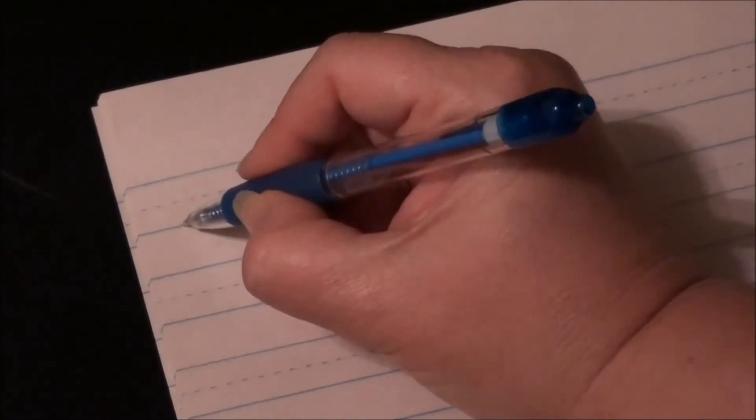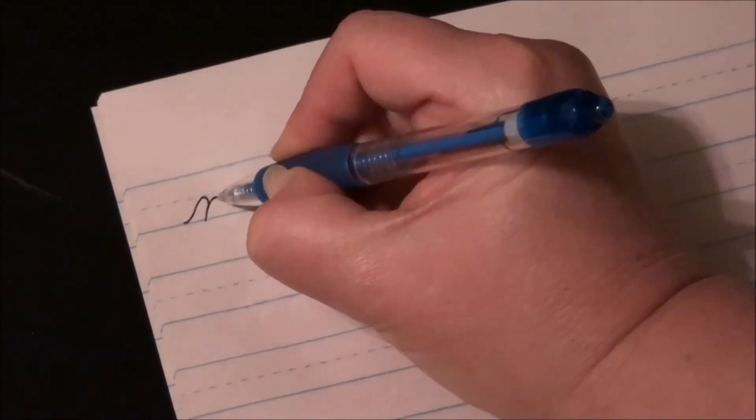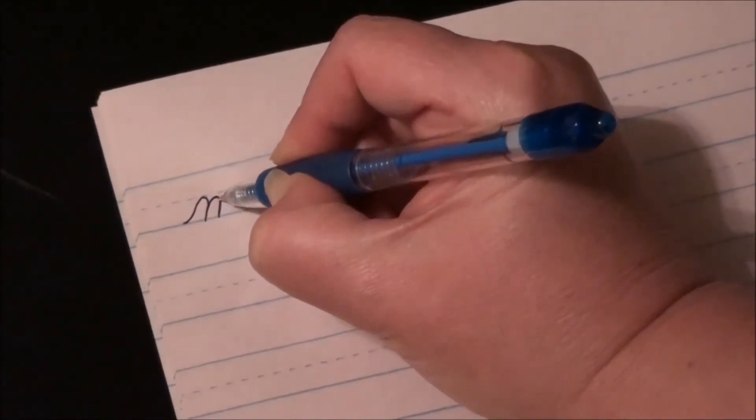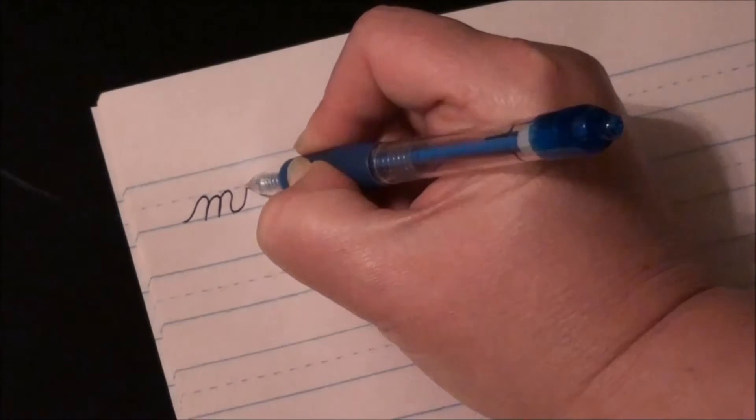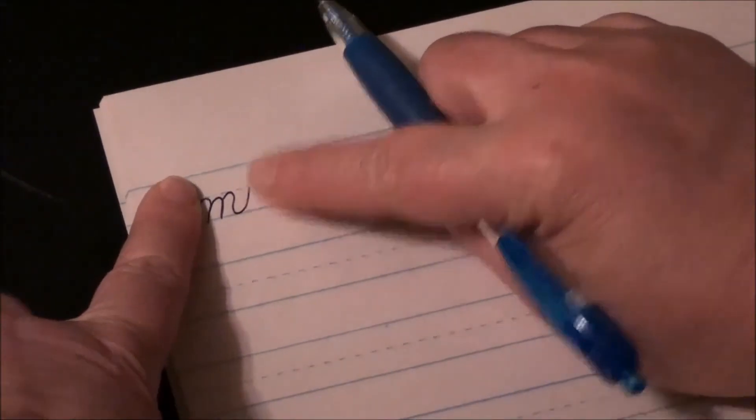So let's practice our other hump letters. Here we go. M: hump, retrace, hump, retrace, hump, dip, tail. Check for your printing M, there it is.